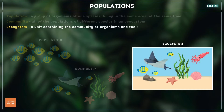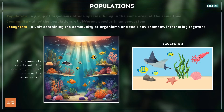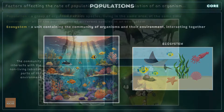An ecosystem is a larger scale system that comprises both the community of living organisms and their physical environment. For example, the coral reef ecosystem includes coral colonies, fish, algae, crustacea and other organisms that interact with the physical elements of the reef structure, water clarity and currents, dissolved oxygen and sunlight.